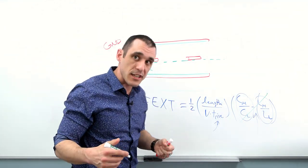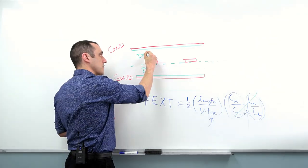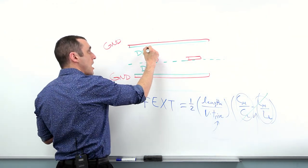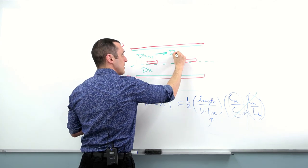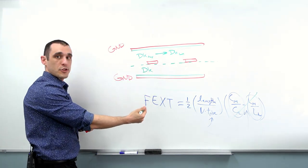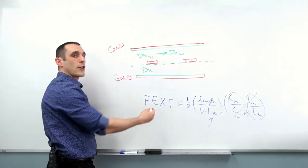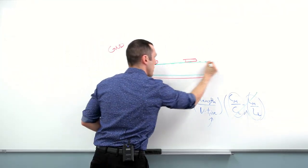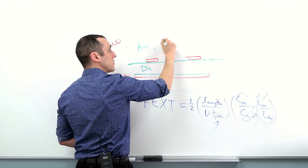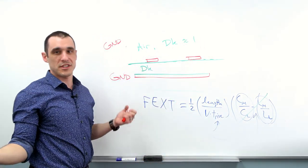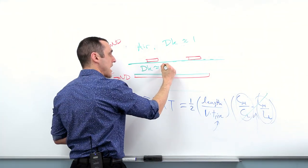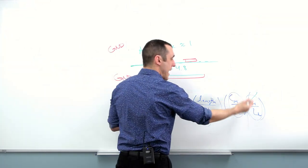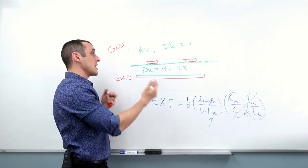This cancellation doesn't always happen — sometimes two slightly different materials are used with slightly different Dk values, and you don't get perfect FEXT cancellation. However, making the top Dk approach the bottom Dk will reduce far-end crosstalk toward zero. With microstrips, the substrate has a Dk of roughly 4 to 4.8, but above the trace you have air with a Dk near 1.003. This large asymmetry prevents cancellation, so microstrips will always have some far-end crosstalk.